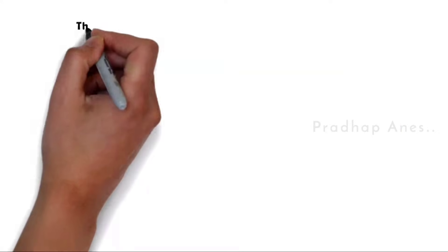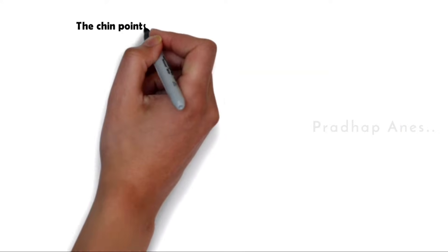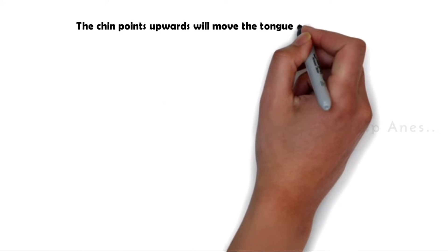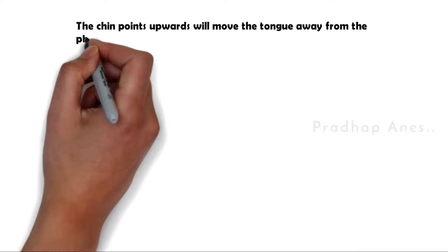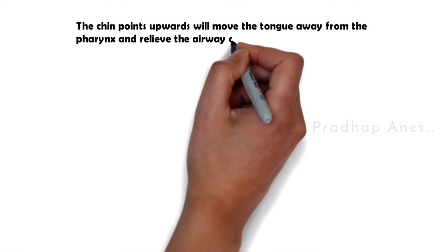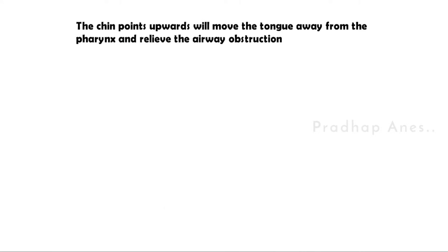The jaw thrust and head tilt chin lift maneuver help in such a way that the tip of the chin points upwards, which moves the tongue away from the pharynx and relieves the airway obstruction.